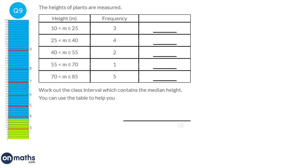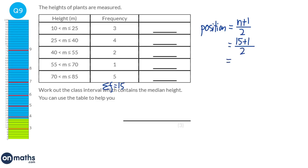To find the median we need all numbers in order and find the middle one, but with a frequency table we use the formula: median position is n plus 1 divided by 2. Adding up all the frequencies gives n equals 15 — 3 plus 4 plus 2 plus 1 plus 5. So 15 plus 1 divided by 2 is 8, meaning the median is in the 8th position.